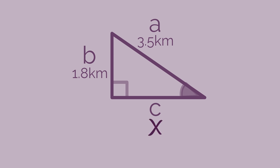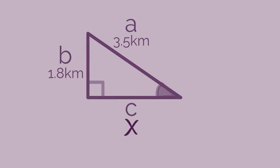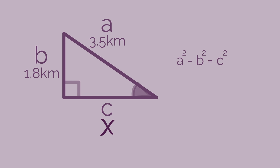Start by labelling the longest side as A and then B and C are the short sides. So in this example, we already know the longest length. So we'll just use a rearranged version of Pythagoras' theorem. The biggest square, take away a smaller square, will give you the other smaller square. Substituting in our numbers, 3.5 squared take away 1.8 squared equals C squared. So C squared is 9.01. And square rooting that, we get C equals 3 kilometres.